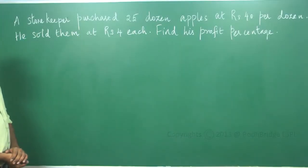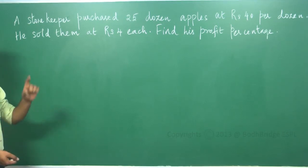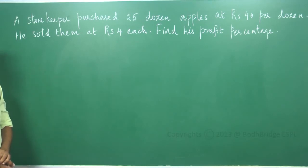A storekeeper purchased 25 dozen apples at Rs. 40 per dozen. He sold them at Rs. 4 each. Find his profit percentage.